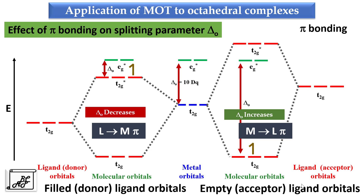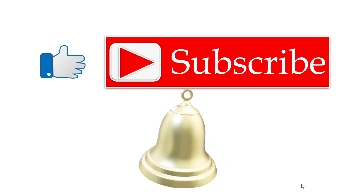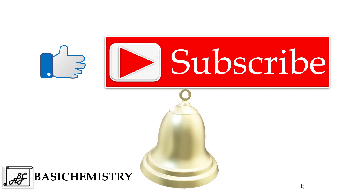This is the effect of pi bonding on the splitting parameter. In the case of filled or donor ligand orbitals, delta O decreases, and in the case of empty or acceptor ligand orbitals, delta O increases. I hope you followed the application of molecular orbital theory to sigma bonding as well as pi bonding. If you like my video, click on like, share and subscribe to my channel. Mention any questions in the comment box, and don't forget to press the bell icon to get notifications of my new videos. Keep watching Basic Chemistry. Thank you.